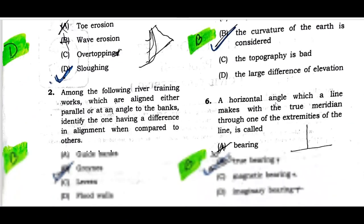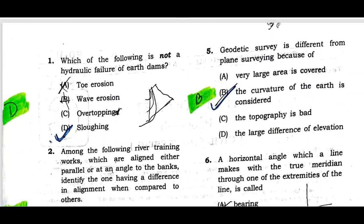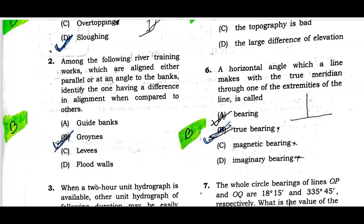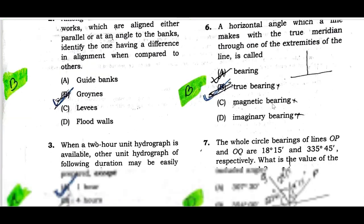Question number five: Geodetic survey and plane survey are different because the curvature of the earth is considered. Option B is the correct one. Question number six: A horizontal angle which a line makes with a true meridian through one of the extremities of the line is called true bearing. Option B is the correct one.